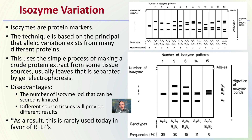Different source tissues will provide different results, so it may not necessarily be repeatable across the whole plant. As a result, this is rarely used today, in favor of what I'm going to talk about next — RFLPs — which you may still see in some instances, particularly in older studies.